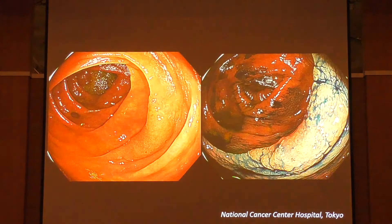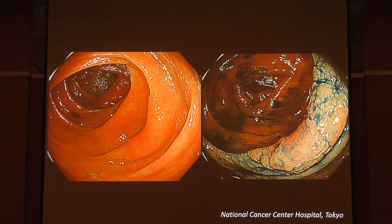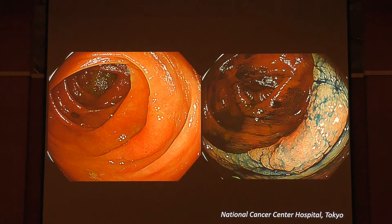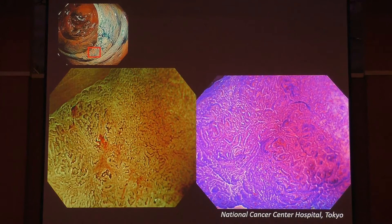Case 5. This is also an interesting case. The lesion is located in the ascending colon. Focus on that red box using NBI with magnification and chromoendoscopy with magnification.